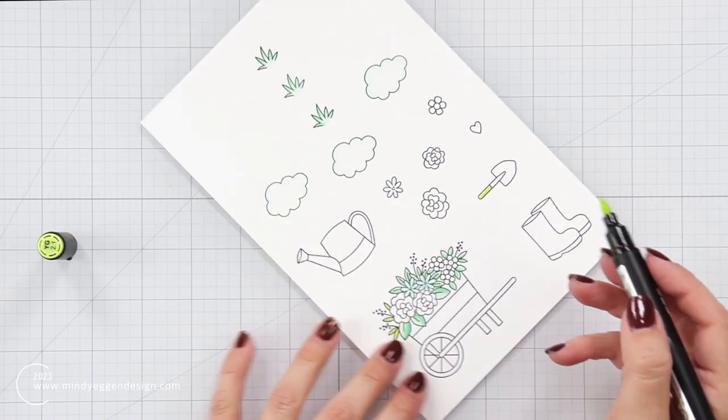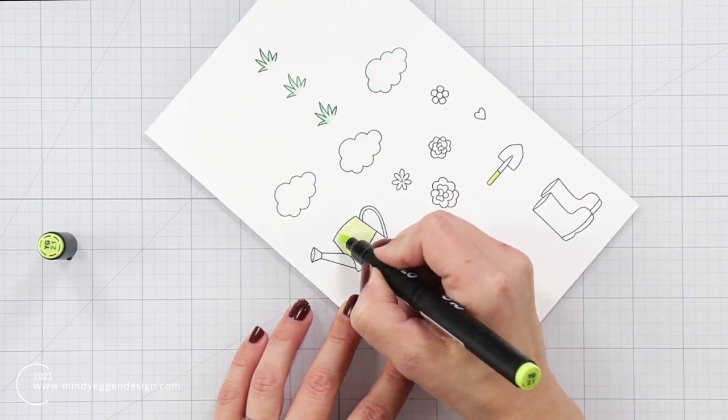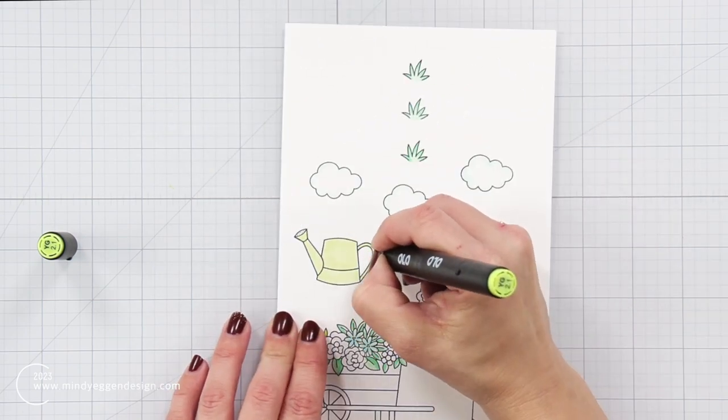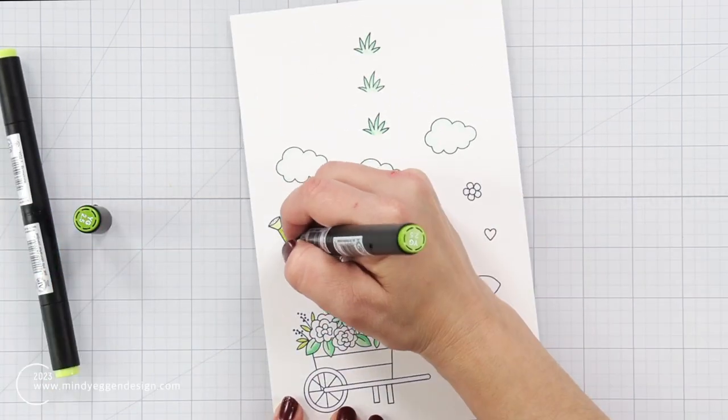I especially like to do this when I have very small areas because I really don't need to blend anything out. I just need to add a shadow area to kind of give it a little bit of dimension and contrast.